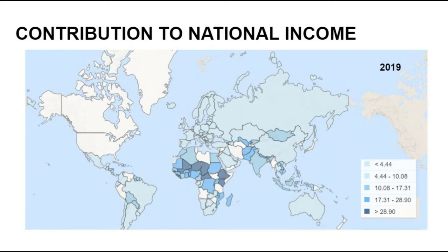In a country which is predominantly agricultural and overpopulated, there is greater inequality of income between the rural and urban areas. In order to reduce this inequality, it is necessary to give more importance to agriculture. The prosperity of agriculture would raise the income of the majority of the rural population, and this inequality in income can be reduced to some extent.